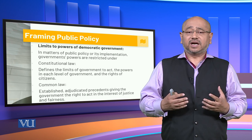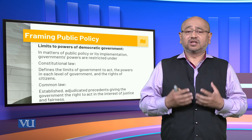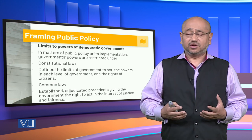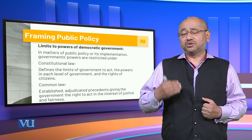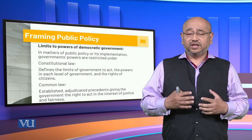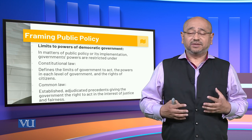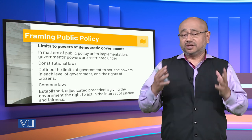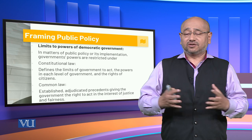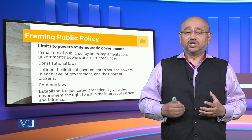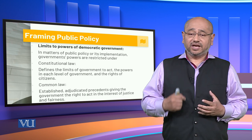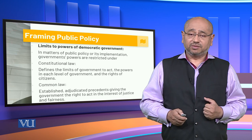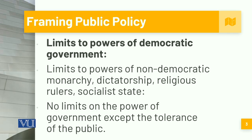The common law, established through adjudicated precedence, gives the government the right to act in the interest of justice and fairness. Those countries which were ruled under the British Raj all have the common law system, which essentially emanated from the historical legal frameworks of the United Kingdom. Other countries adopted that same legal structure, which adjudicates based upon precedence and in the interest of justice and fairness — that is what common law is all about, while constitutional law remains defined within the constitution.